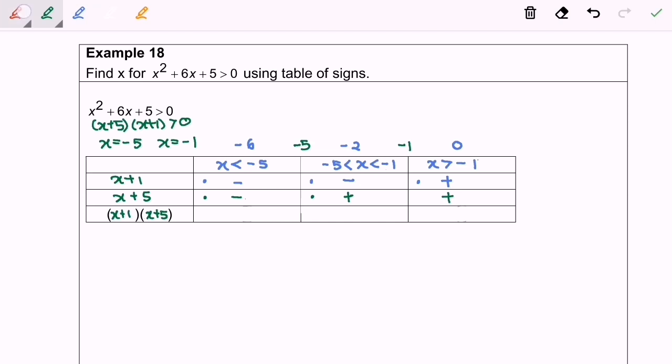Finally, for the product row, we have positive for x < -5, negative for -5 < x < -1, and positive for x > -1.